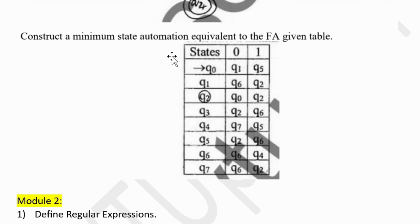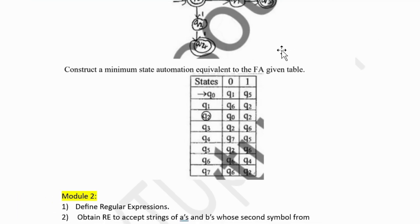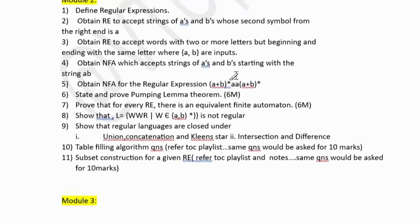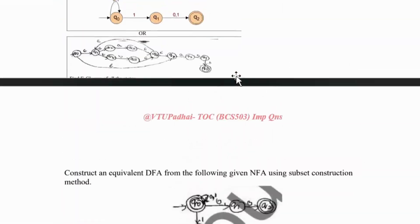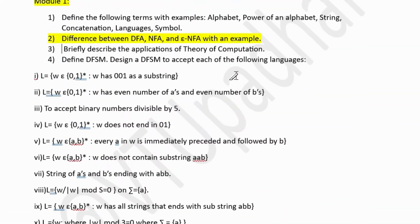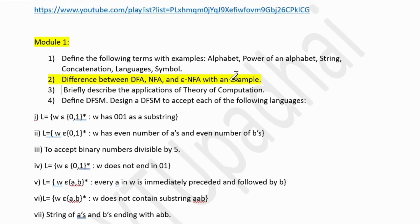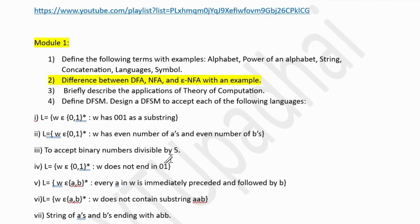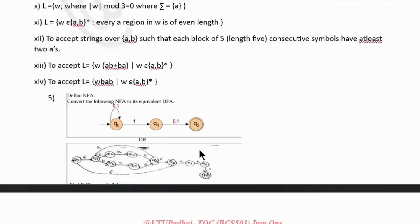Construct a minimum state automation equivalent to finite automata given a table — again a very easy question. This is from the second module actually. I would say first module is pretty easy, guys. It's all about designing the DFA and then conversion of NFA to DFA and the basic questions. If you cover this, you'll be thorough with the first module and you'll get 20 marks for sure.